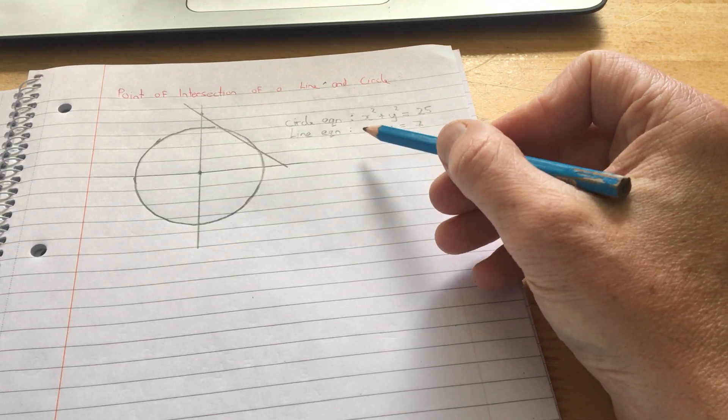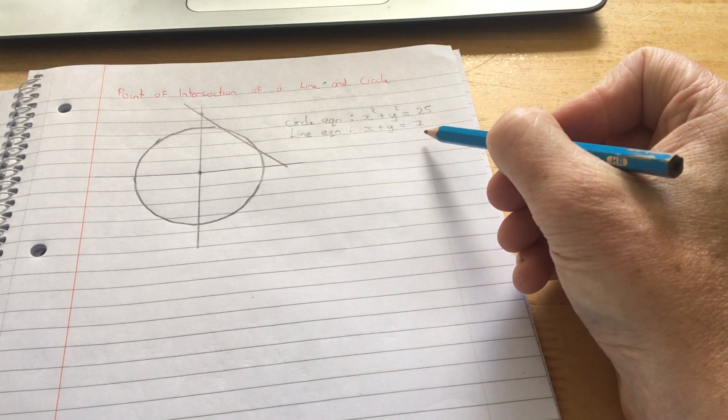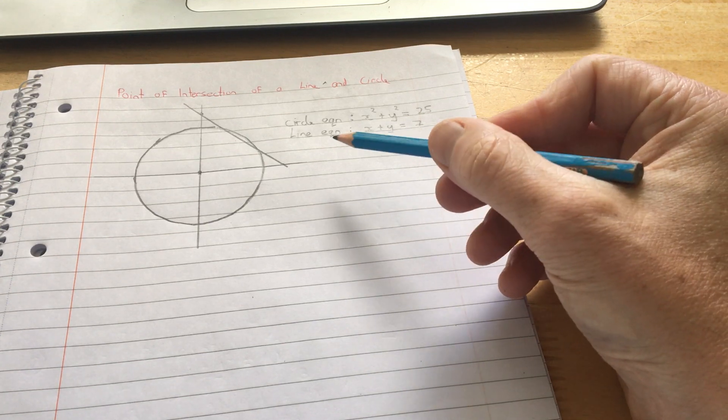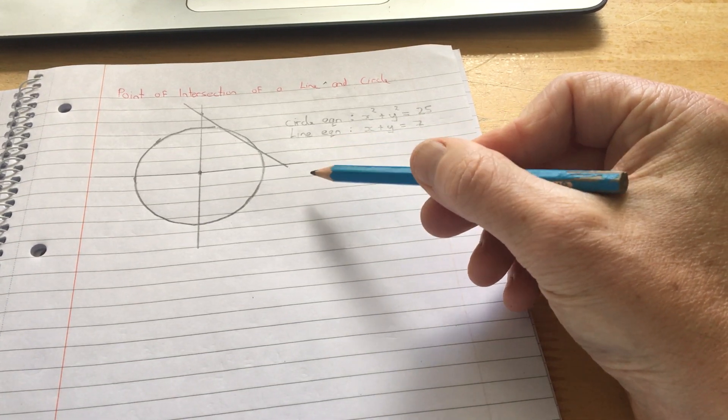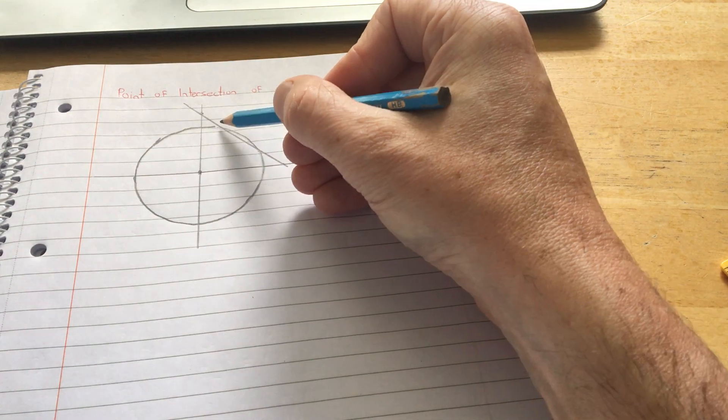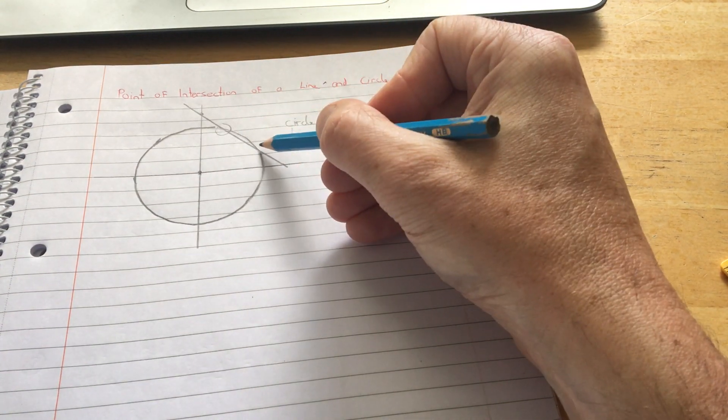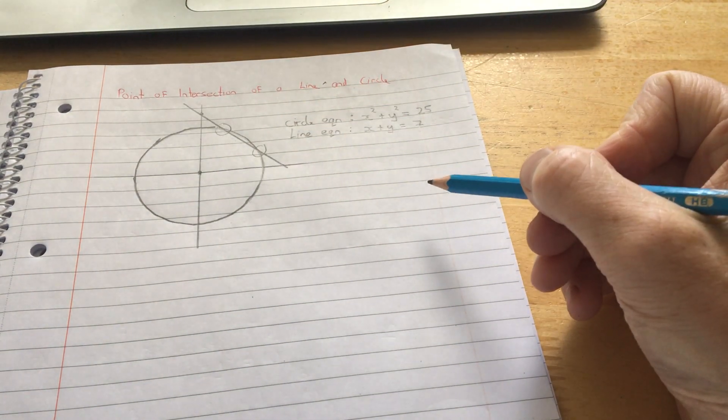Then we have the equation of a line, x plus y equals 7. So how do I find the points of intersection between the line and the circle? In other words, I'm looking for these two points here, the point where the line crosses over to the circle.